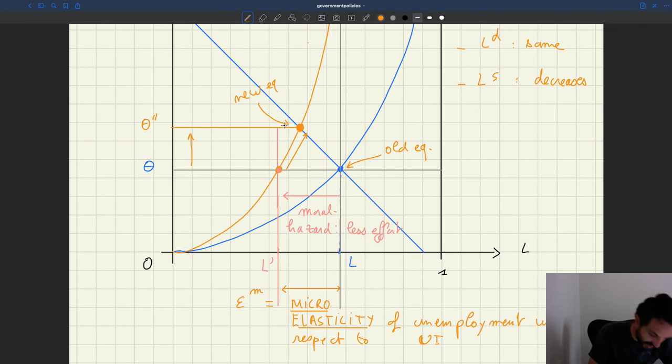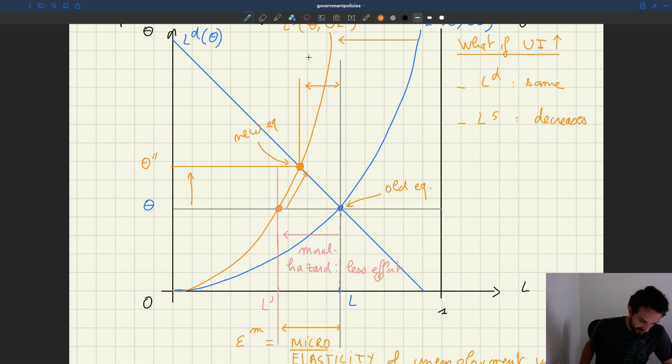Actually we can compare the old employment with the new employment, and that gap is now here. And as you can see, this gap here is what we call epsilon with a capital M, the macro-elasticity of unemployment with respect to UI.